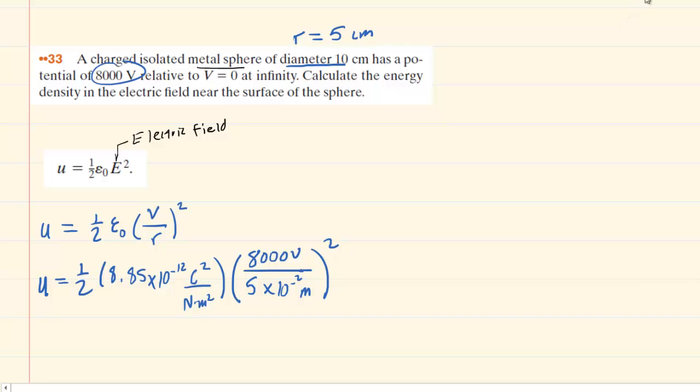Pick up your calculator and punch this in. When you do so you should get an energy density of approximately 0.11. The unit of energy density is joules per meter cubed. It's a little hard to see how that comes about with all the units in our calculation, but it does come out to the standard unit of joules per meter cubed. This is the correct answer to the question.